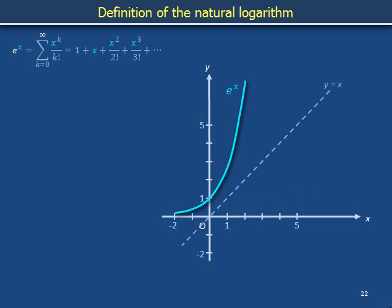We draw the y equals x diagonal and then reflect the turquoise curve of e to the x across the diagonal to obtain the yellow plot of what is called the natural logarithm, whose association rule, here spelled out literally with the letters ln parenthesis x close parenthesis, that's pronounced the natural logarithm of x.